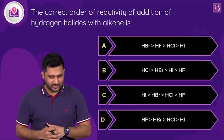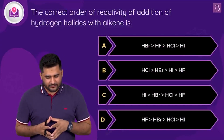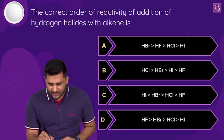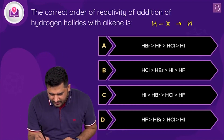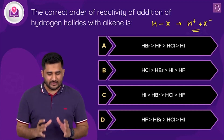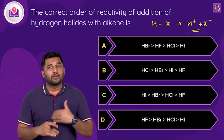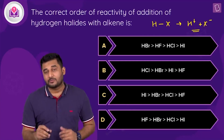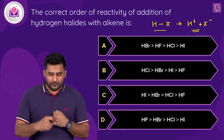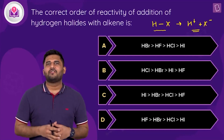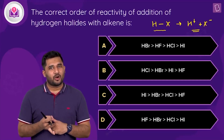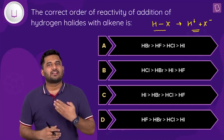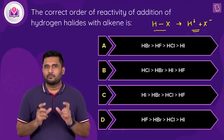Next question: find the correct order of reactivity of addition of hydrogen halides to alkenes. When hydrogen halides add to an alkene via Markovnikov's addition, they dissociate into H⁺ and X⁻. The rate of reaction depends on the bond strength of the H–X bond — the weaker the H–X bond, the easier it dissociates into H⁺ and X⁻, leading to a faster rate of reaction.